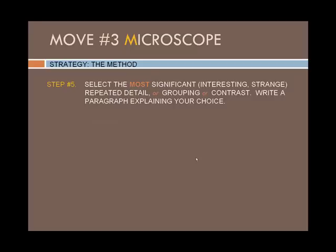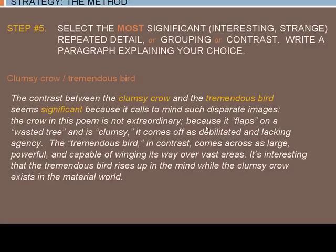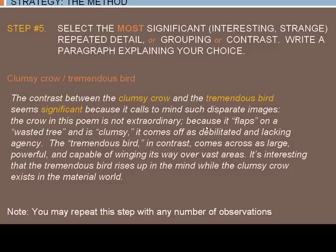Here is an example. We chose 'clumsy crow' versus 'tremendous bird.' The contrast between the clumsy crow and the tremendous bird seems significant because it calls to mind such disparate images. The crow in this poem is not extraordinary — because it flaps on a wasted tree and is clumsy, it comes off as debilitated and lacking in agency. The tremendous bird, in contrast, comes across as large, powerful, and capable of winging its way over vast areas. It's interesting that the tremendous bird rises up in the mind, while the clumsy crow exists only in the material world. Note: you can repeat this step with any number of observations.